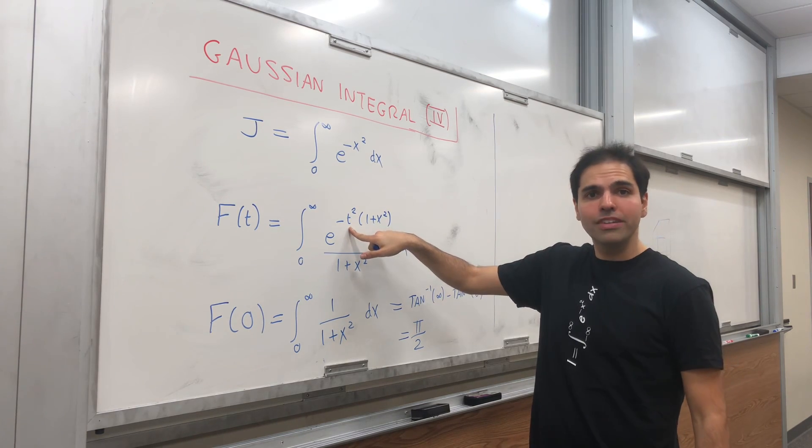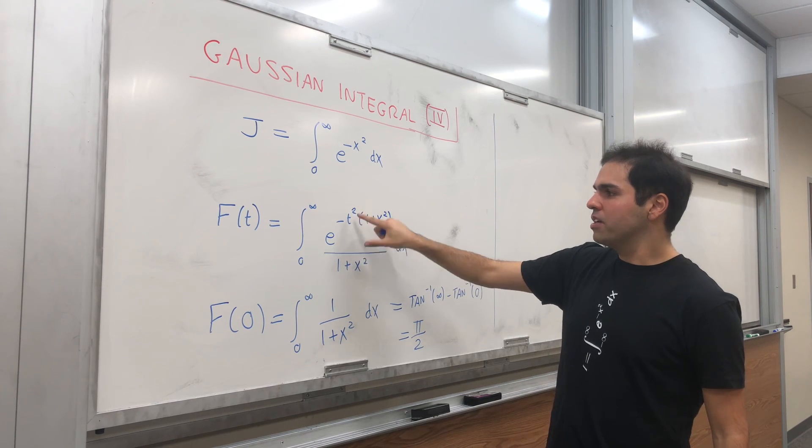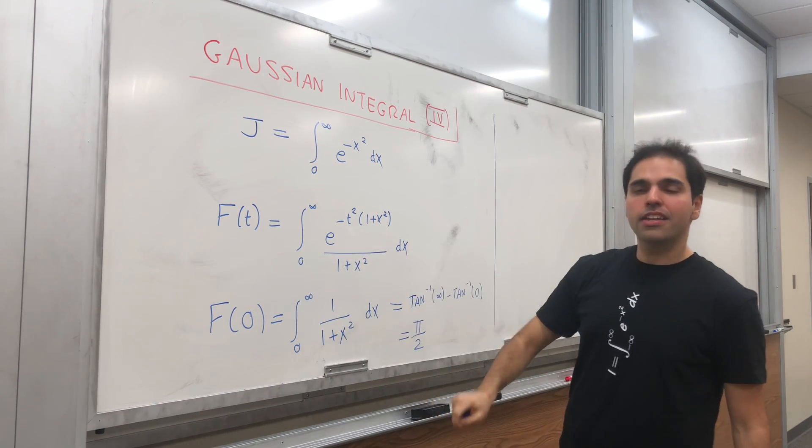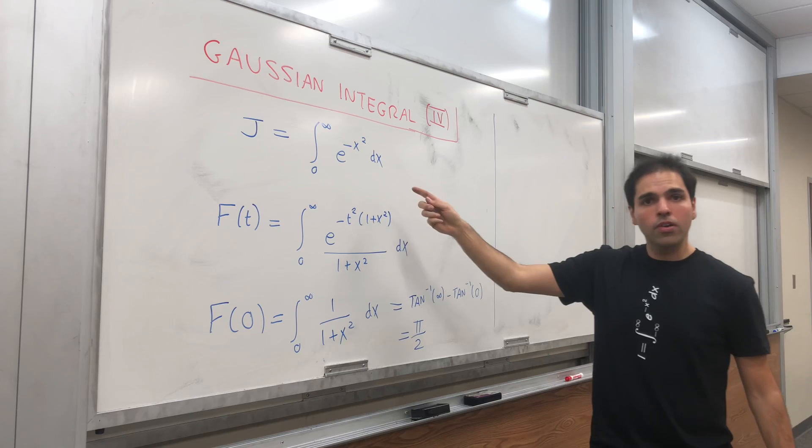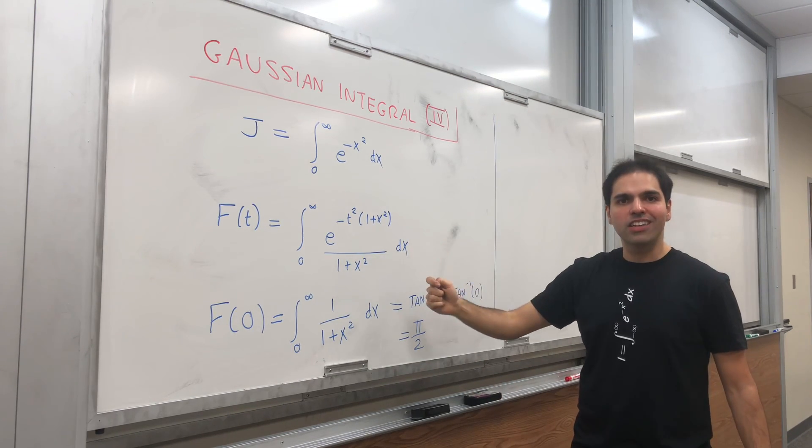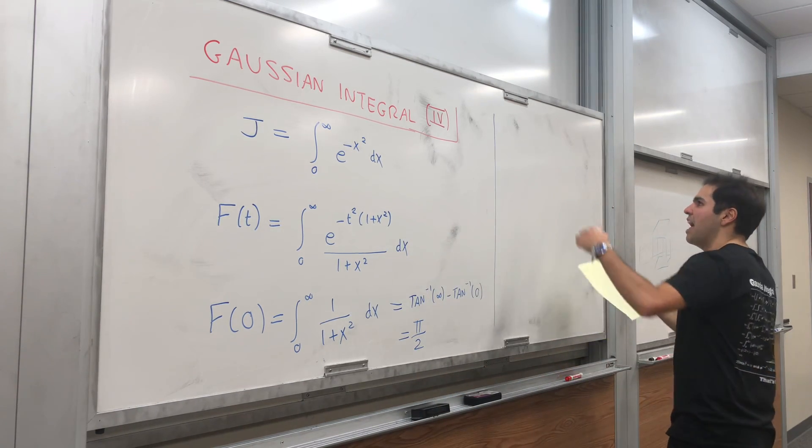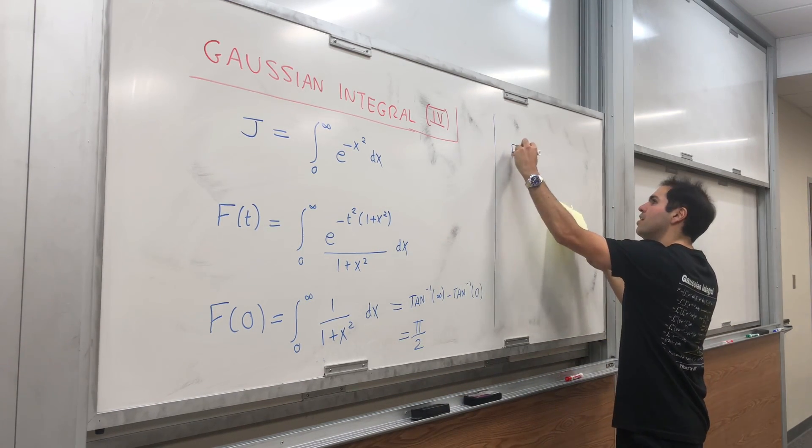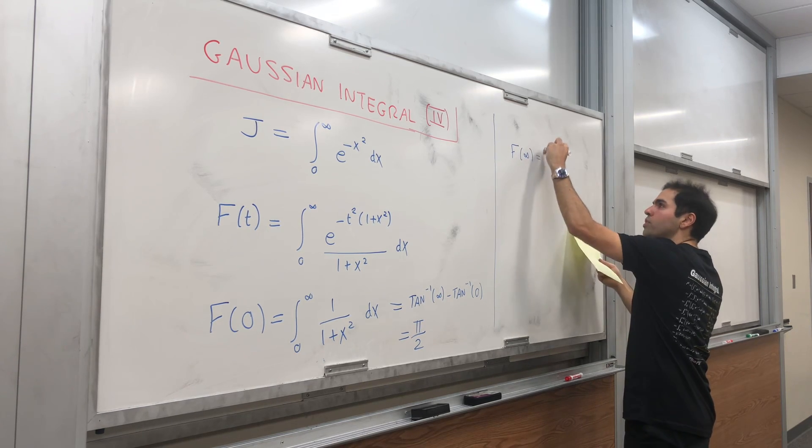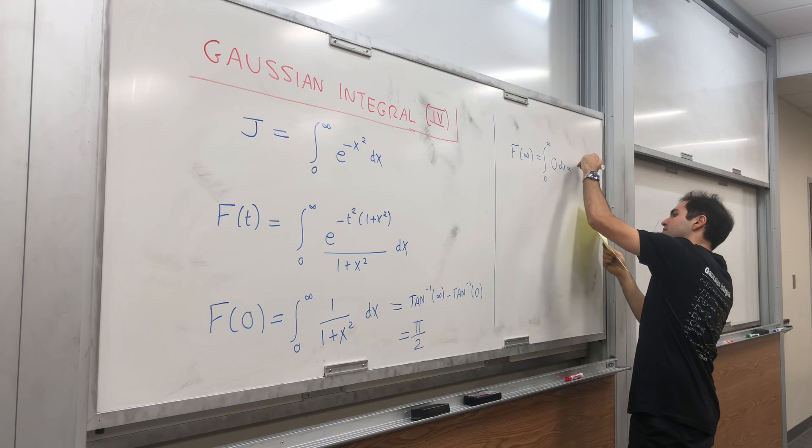notice at every point, this function becomes zero. And it's not clear if the integral still goes to zero, but by what's called the dominated convergence theorem it's actually okay. So indeed, f of infinity equals to integral from zero to infinity of zero dx. And that's zero.